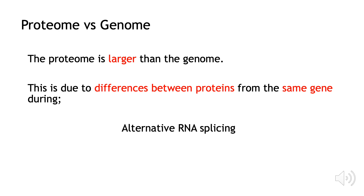It is important to know that the proteome is much larger than the genome. While we do not know the exact numbers, the genome is estimated at around 20,000 to 25,000 genes, while the proteome is anywhere between 250,000 to over a million different types of protein.